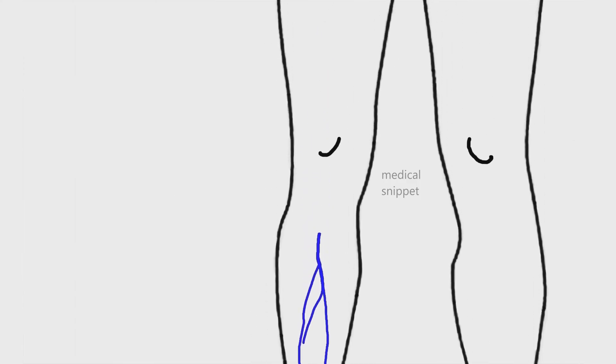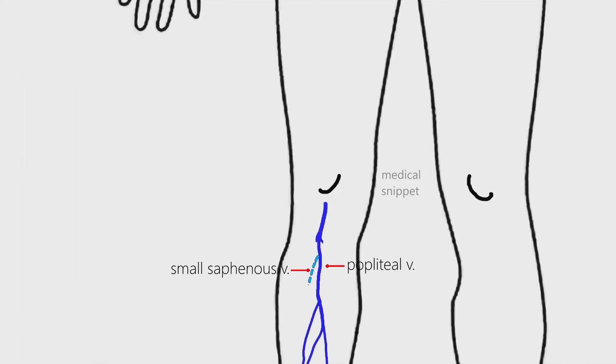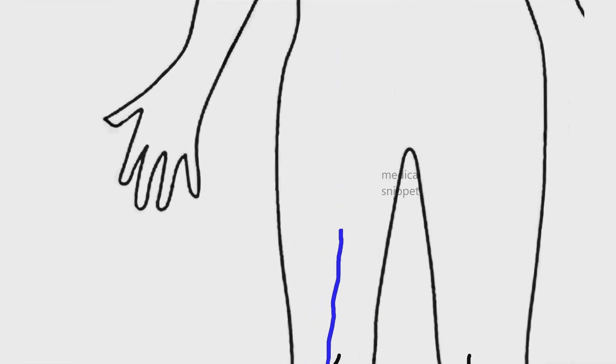The main tributaries of the popliteal vein are small saphenous vein and gastrocnemius veins. The popliteal vein, as it ascends through the adductor hiatus, becomes the superficial femoral vein. The superficial femoral vein unites with deep femoral vein to form common femoral vein. The common femoral vein continues as external iliac vein as it passes deep to the inguinal ligament.